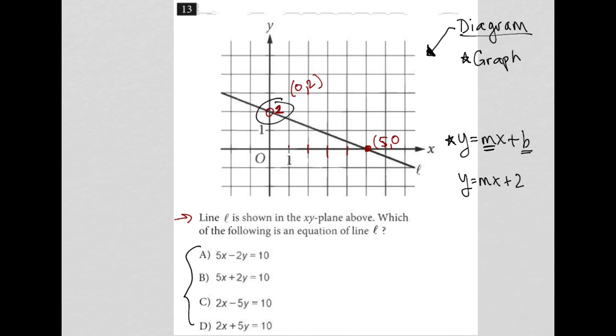And then the slope is just rise over run. So between those two points, I'm going to go down 2, so that's negative 2 for my rise. And I'm going to run over 5, so that's positive 5 for my run. Which means m is equal to negative 2 fifths. So I'd have y equals negative 2 fifths x plus 2.